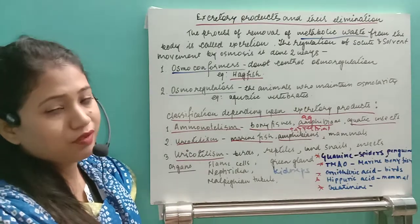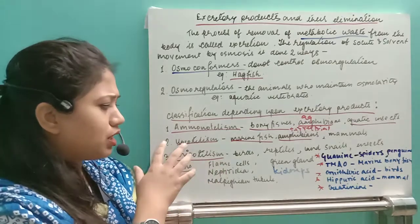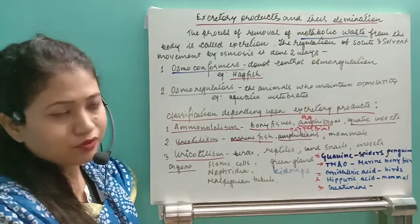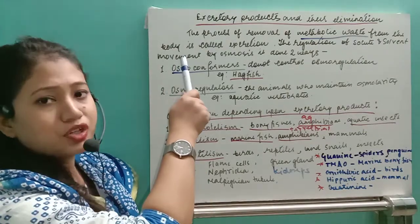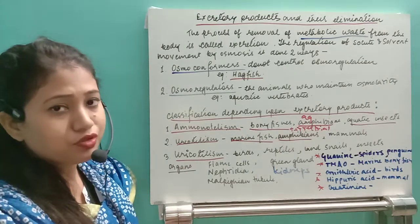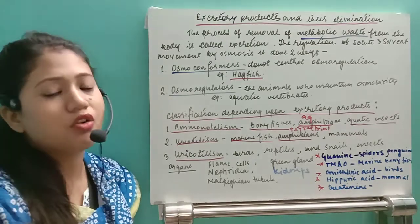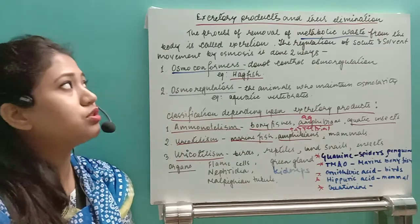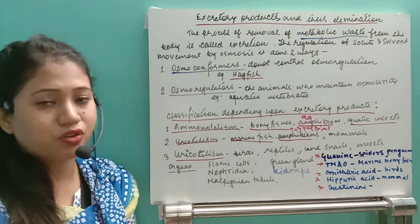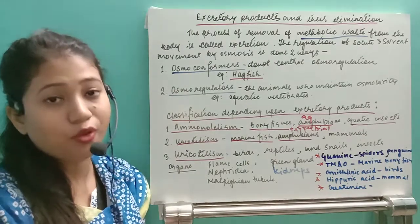To summarize: ammonotelic, ureotelic, and uricotelic organisms are the three important groups based on their waste products. We covered the definition of excretion, and the maintenance of osmosis — if an organism can maintain osmosis it is an osmoregulator, if it cannot it is an osmoconformer. From the next class, we will study the structure of the kidney and the detailed structure of the whole excretory system. Thank you.